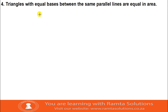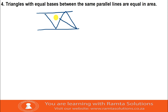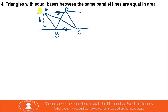Triangles with equal bases between the same parallel lines are equal in area. Let's do this - we have points A, C, D. The lines are parallel. If the lines are parallel, the height will be the same. We have triangle ABC and also triangle DBC - when you look at them, their bases are the same because they share base BC. They are between parallel lines, so let's see if their areas are the same.